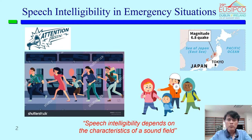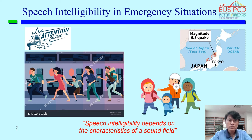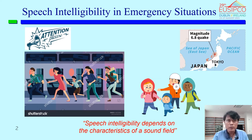The next example is an earthquake emergency announcement in Japan. In a poor sound field, we might hear something like this. For a better quality auditorium, you should hear it more intelligibly — listen again. Therefore, the sound field affects speech intelligibility a lot, so the characteristics of the sound field need to be carefully considered.